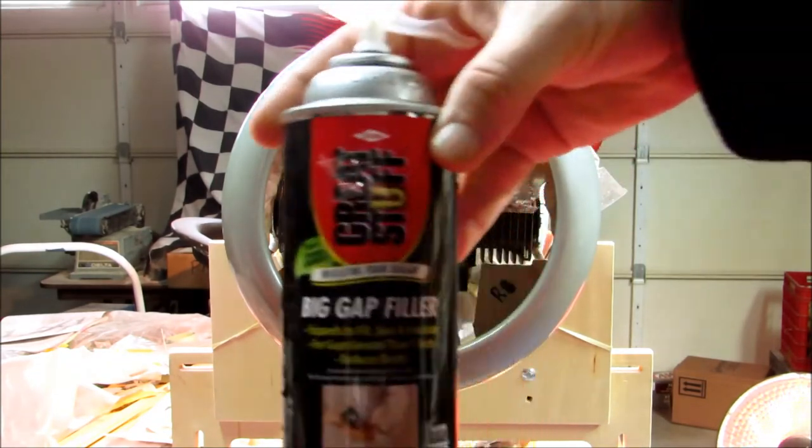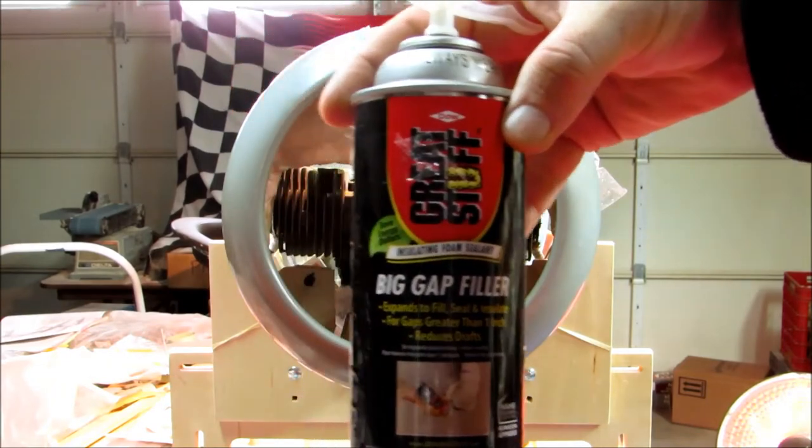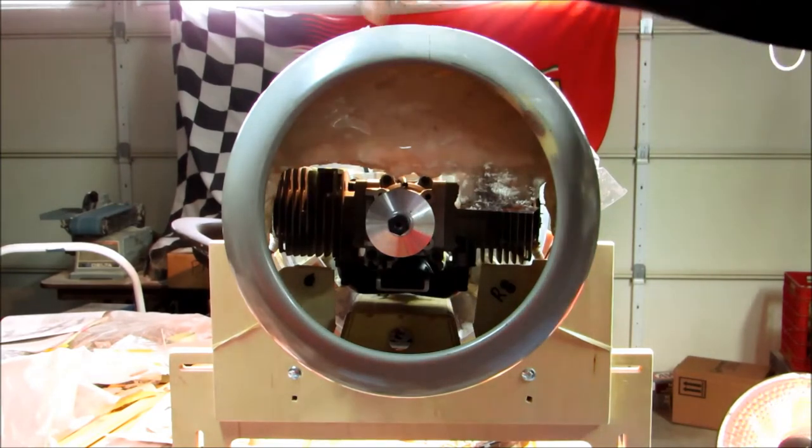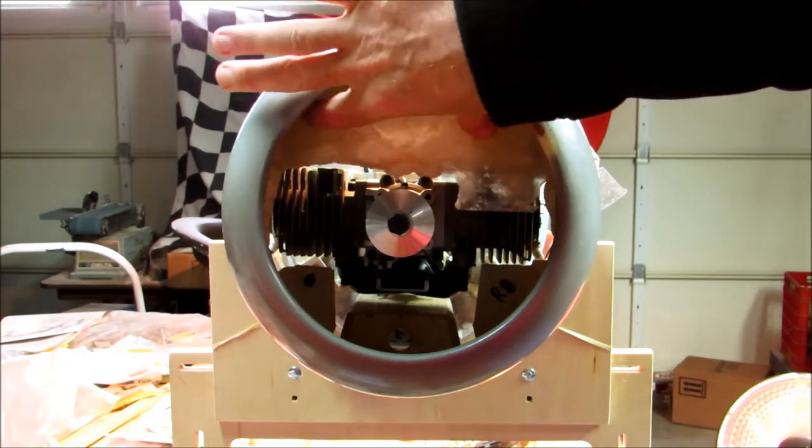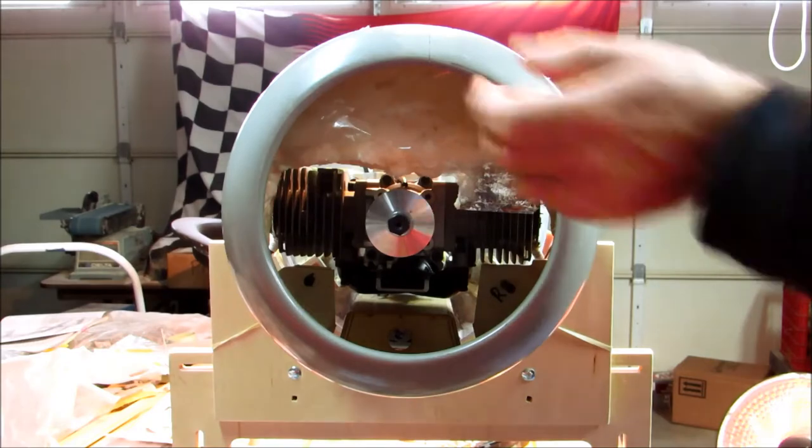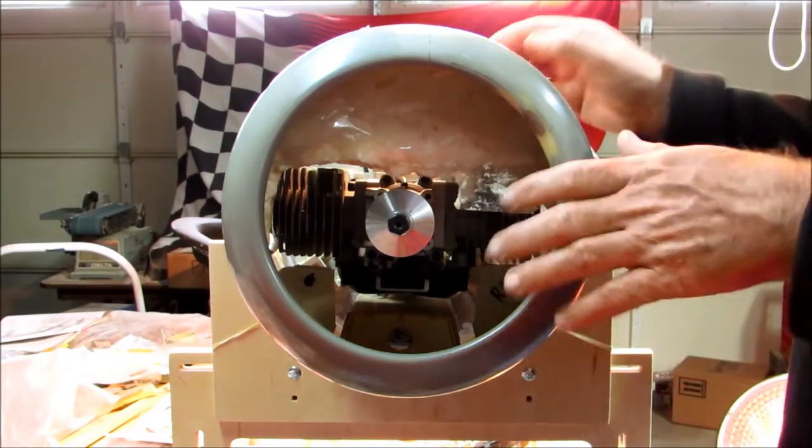I sprayed this expanding foam—it's supposed to help seal cracks in your house—into this area above the motor, actually technically below the motor. I didn't do this on film because I was afraid it wouldn't actually come off.